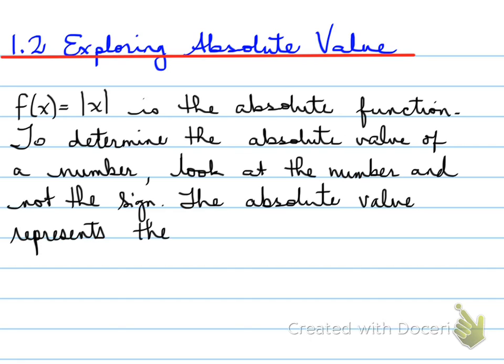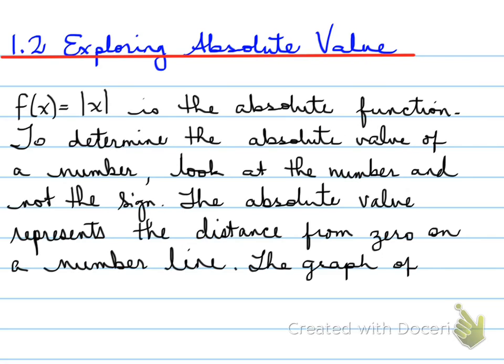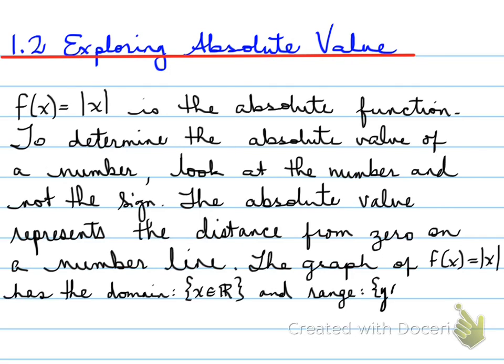The absolute value represents the distance from zero on a number line. So when I take the absolute of a number, how far is that number away from zero? Now the graph of the absolute function has the domain x belongs to real, and the range of y belongs to real such that y is greater than or equal to zero, very similar to the parabola.